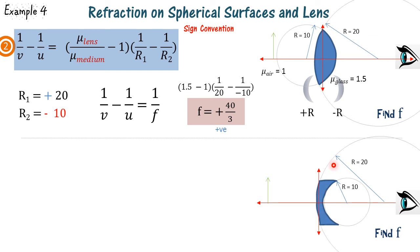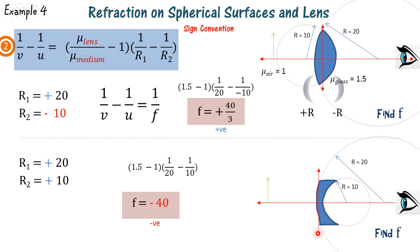In the second example, the outer surface has radius of curvature 20 and the inner surface has radius 10. Since both surfaces are bulging outwards, R1 and R2 both take positive signs. On substituting, we find f equals minus 40, which means it is a concave lens.